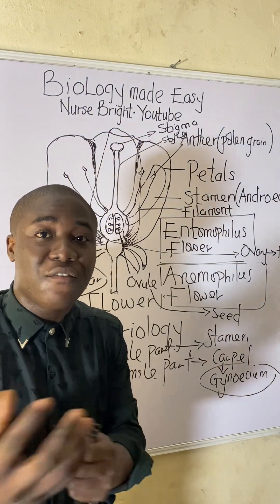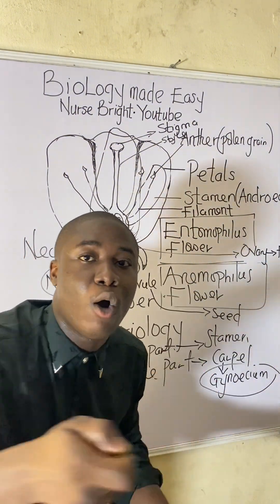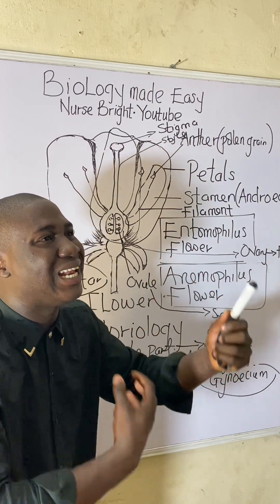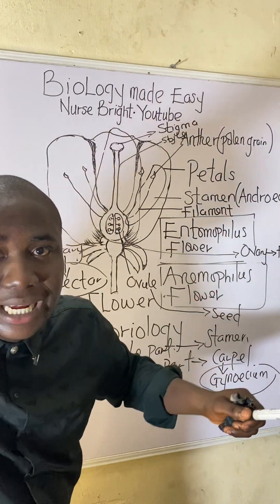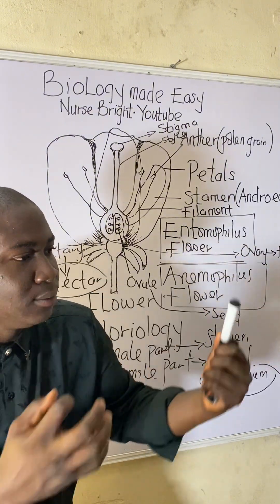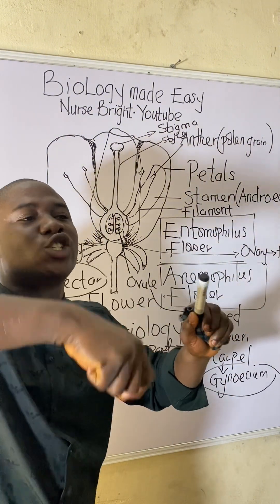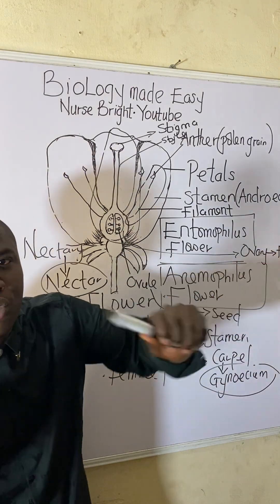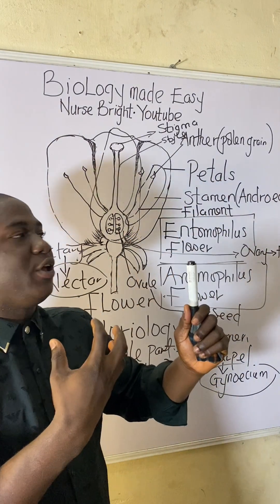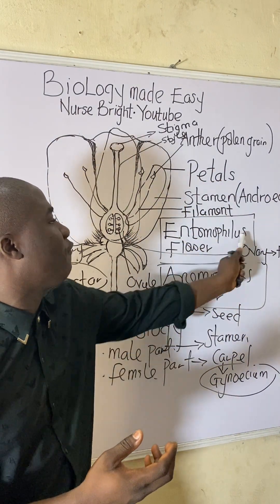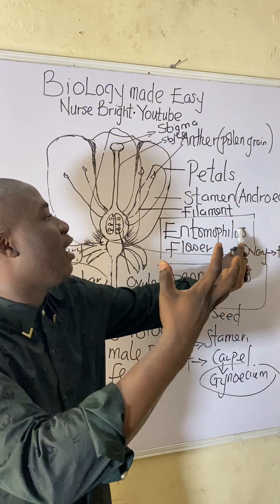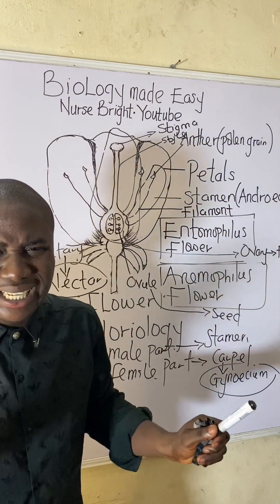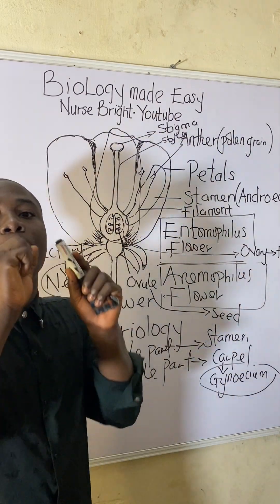The study of insects is called entomology — that's where 'entomophilous' comes from. Anemophilous flowers are pollinated by wind; if you remember, the instrument used to measure wind speed is called an anemometer. So entomophilous means insects that love flowers, and anemophilous relates to wind.